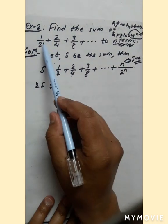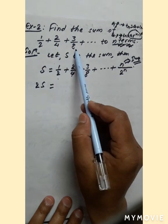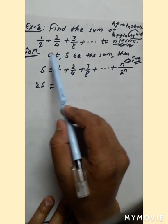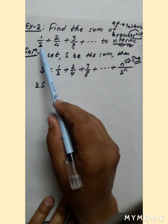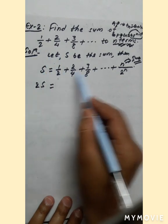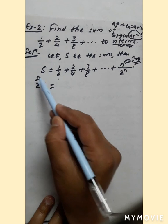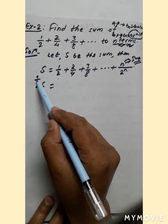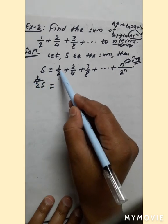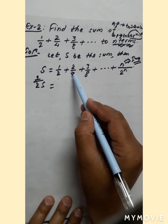The common ratio of the geometric part is 1/2 (since (1/4)/(1/2) = 1/2). Now multiply the series S by 1/2: S/2 = 1/4 + 2/8 + 3/16 + ... written below the original series aligned by powers.